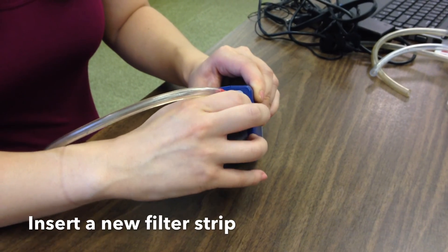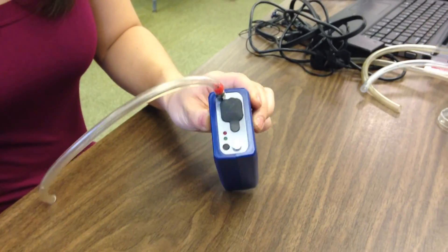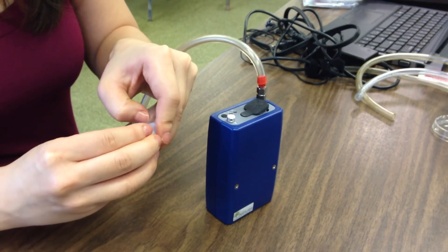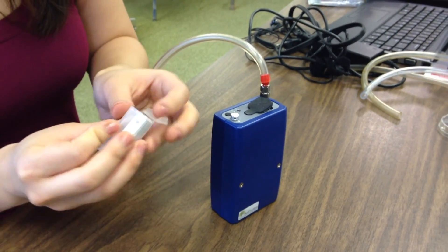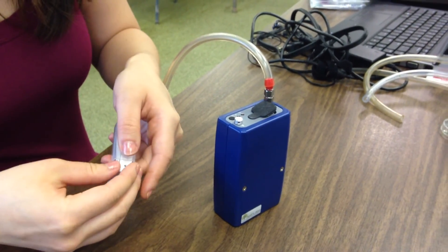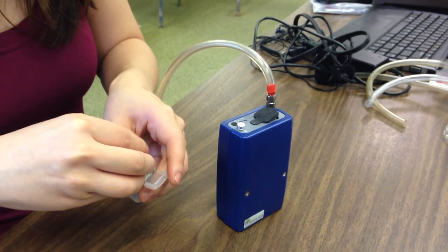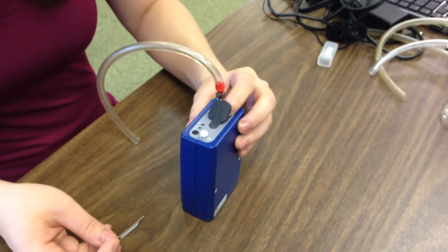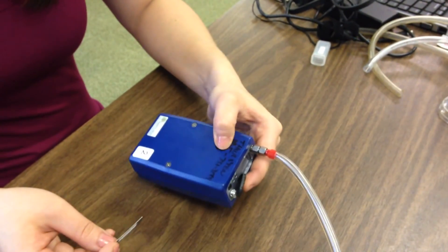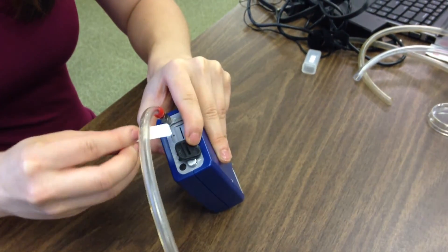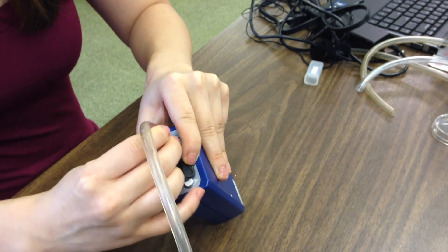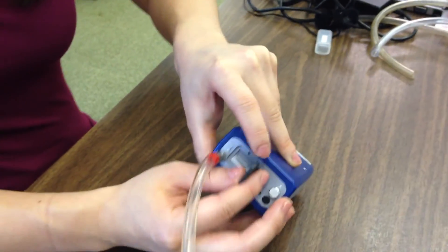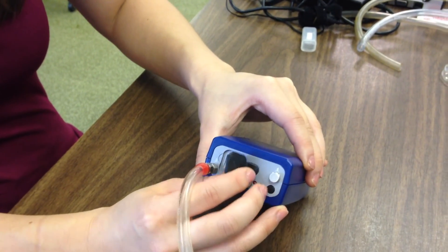Before each run, a new filter strip must be inserted into the ethylometer. Open the black cover at the front panel of the instrument and hold down the filter release button at the bottom while inserting a new filter strip into the slot. The white side of the strip should be facing the top of the ethylometer. Once the strip is securely inserted, place the cover back on.